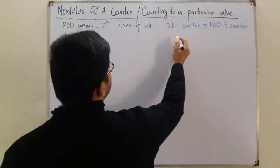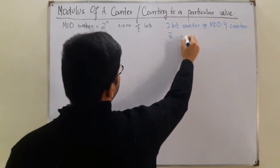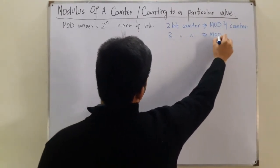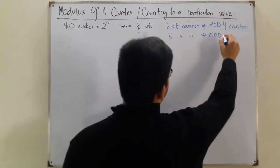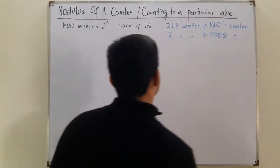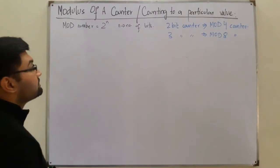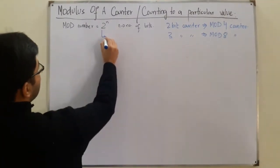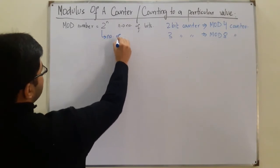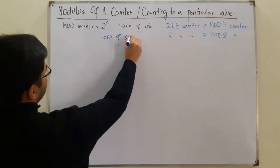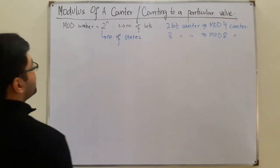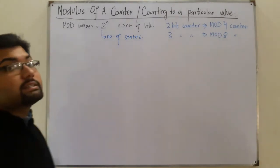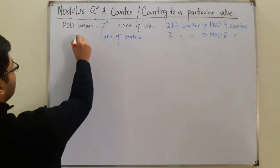Similarly, a three-bit counter is a mod eight counter — two to the power three is eight. Now, two to the power n also denotes the number of states of the counter, so the mod number is the same as the number of states.